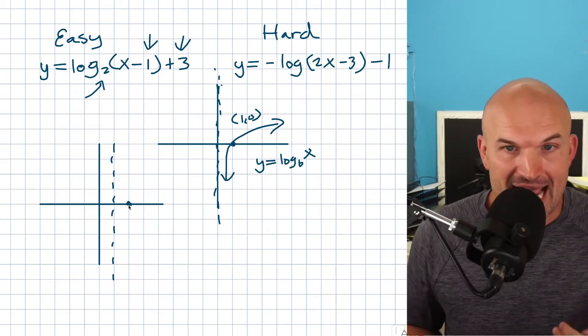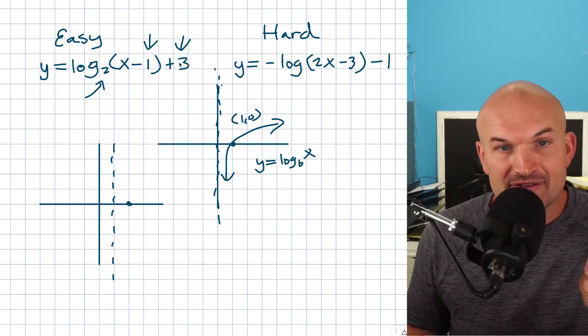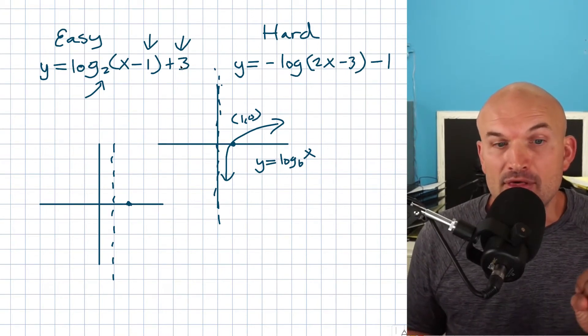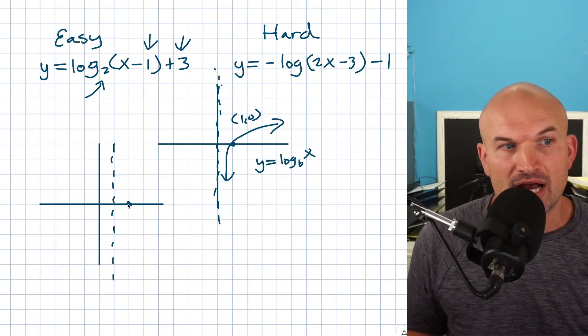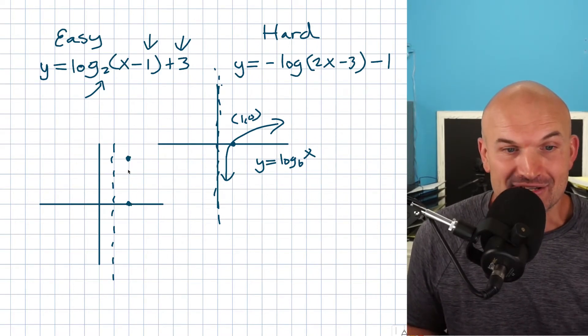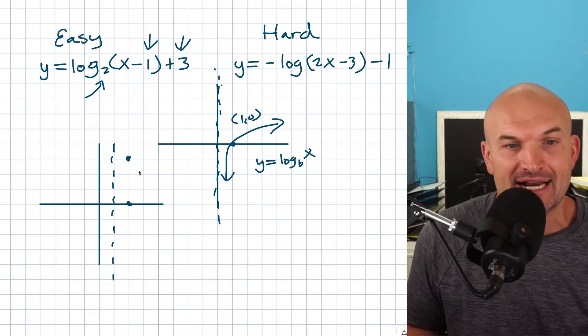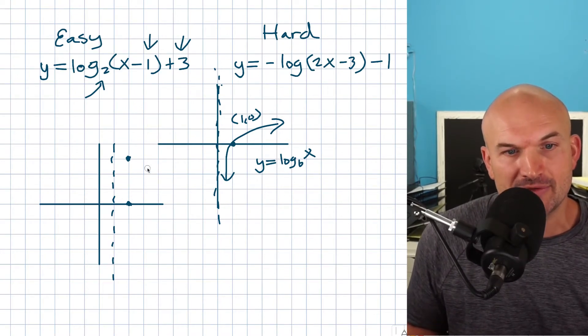Now the next thing is my point that I have at 2,0 is not going to stay there. The graph is also being vertically shifted up three units. So I'm going to take this point and move it up three more units. So we'll go one, two, three. That is going to be my now old x intercept, but that is going to be at least the one point that I know, which is going to be at 2,3.